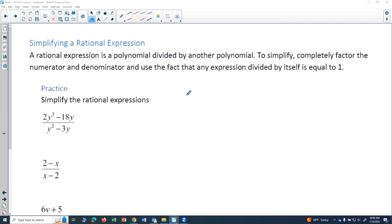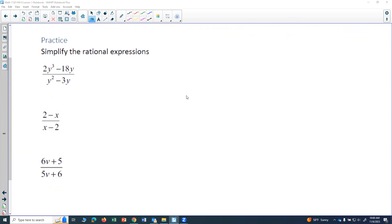Let's do some practice. We are asked to simplify the rational expressions below. So we'll start with this one. We have 2y cubed minus 18y over y squared minus 3y. So in order to know if we have any common factors in the numerator and denominator, we have to factor.